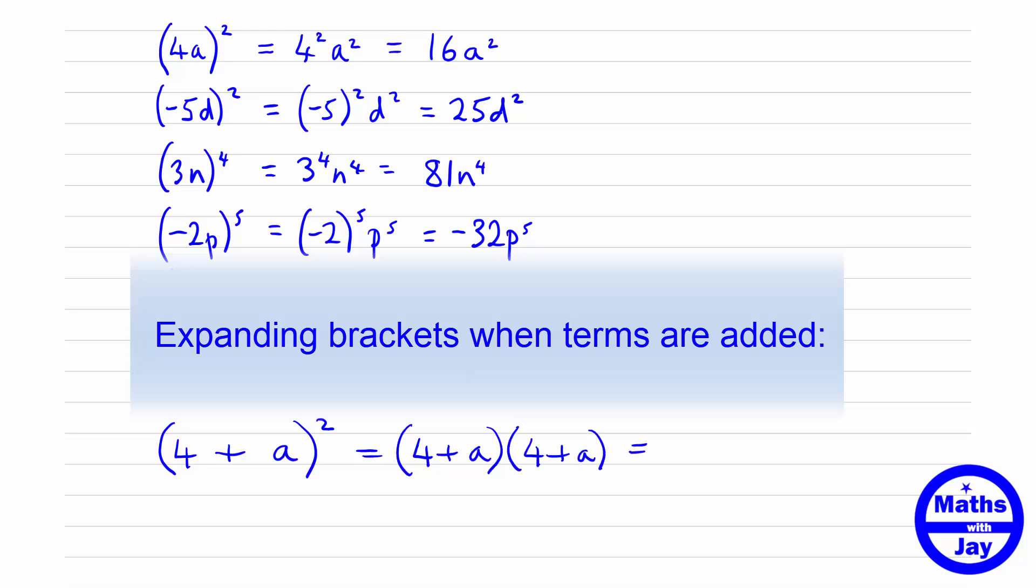That would be 4 times 4, which is 16. It will also be 4 times a, so plus 4a. Then we'd have the a times 4, so another 4a. And last of all, a multiplying a, so that's a².